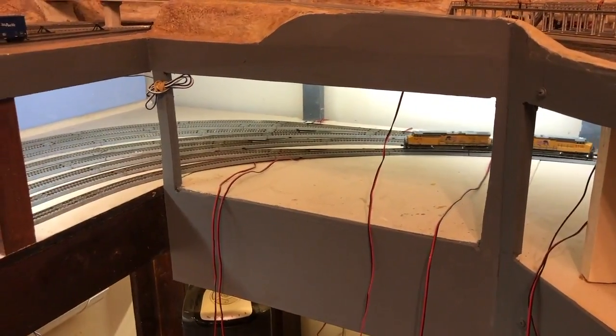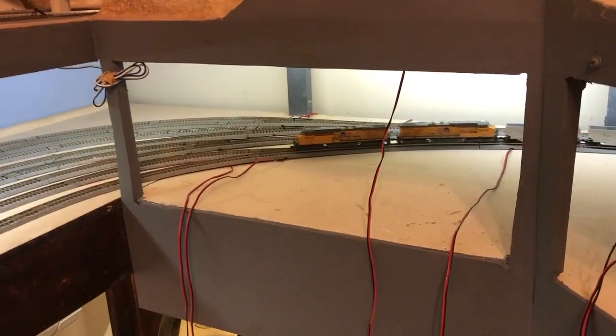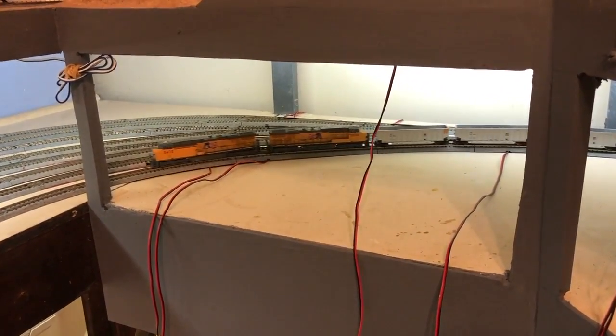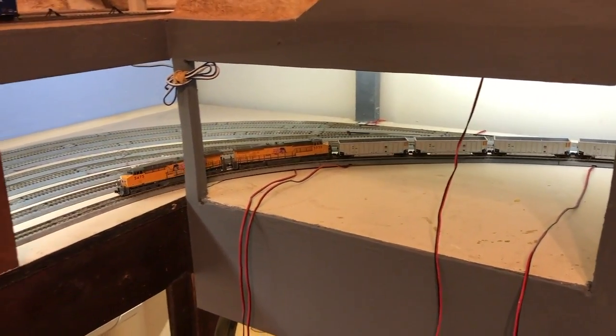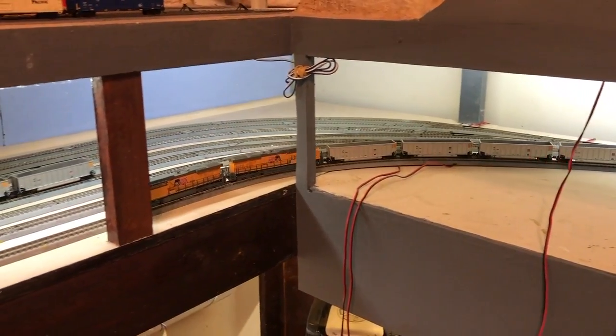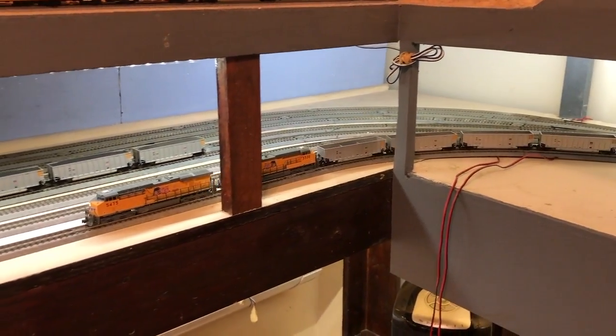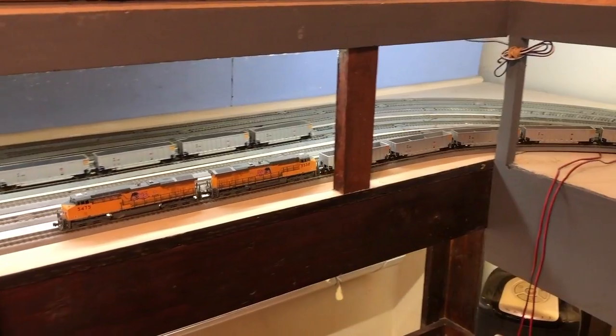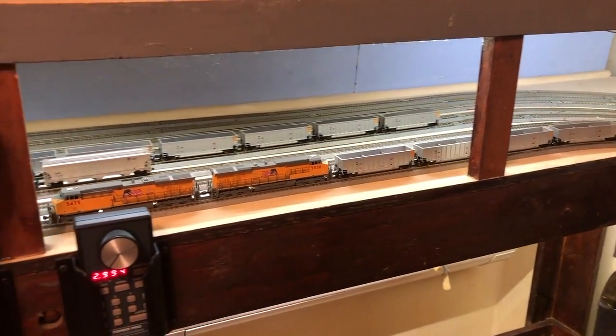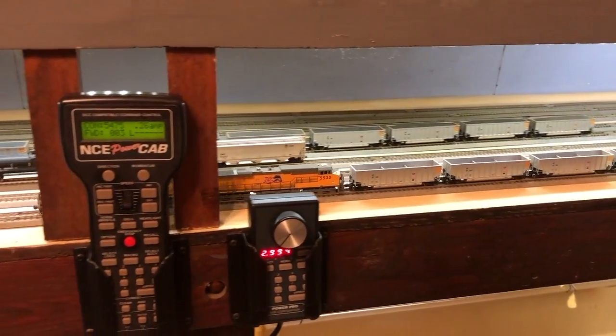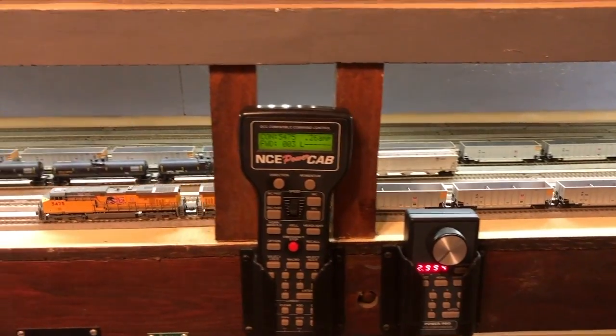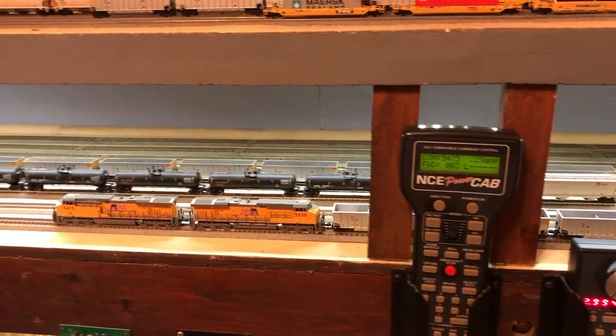That empty eastbound coal train is now arriving in staging. Empty coal trains always run east on my layout. Loaded ones always run west. This creates the illusion of trains running to and returning from the coal fields in Wyoming's Powder River Basin off layout. And the staging yard helps to create this illusion.